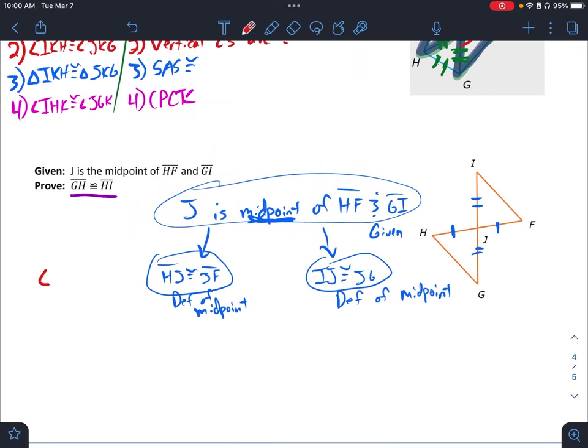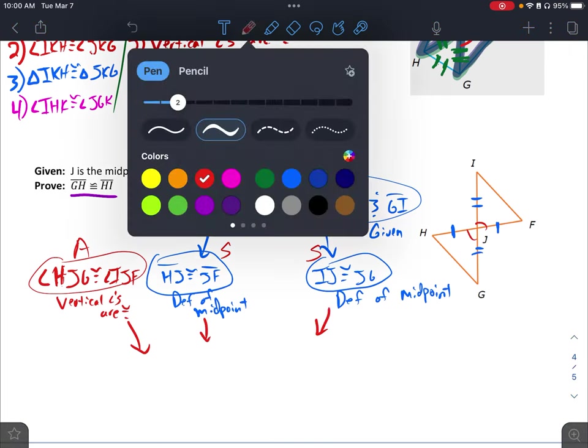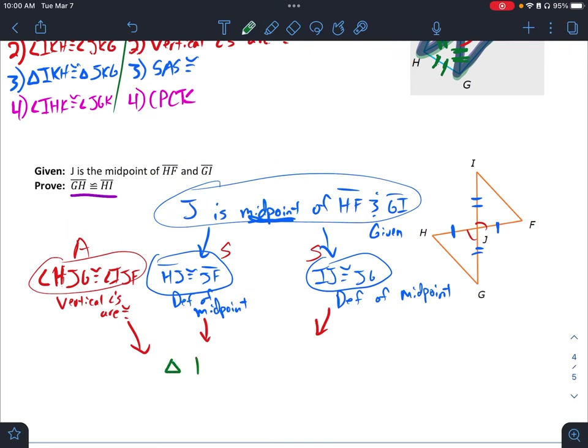Geometric conclusion. Vertical angles. Angle HJG is congruent to angle IJF. Vertical angles are congruent. Here and here. I have angle, side, side. Careful, though. We don't swear in math class. My angle is between my sides. So, I know triangle HJG is congruent to triangle FJI. This is side, angle, side, congruency. Side, angle, side. And then, lastly, finish with what we want. GH is congruent to HI by CPCTC.